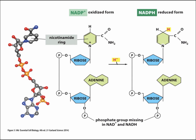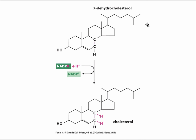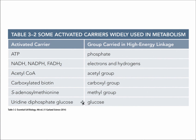Returning to our analogy of a taxi cab, the oxidized form of NADP is the empty taxi cab without passengers. Once it picks up passengers in the form of two electrons and one proton, the taxi cab is full. So it alternates between the reduced form carrying passengers and the oxidized empty form. A good example of how NADP works is given by the generation of cholesterol from its precursor 7-dehydrocholesterol, where electrons and protons are required to rearrange the chemistry within the molecule to form cholesterol.